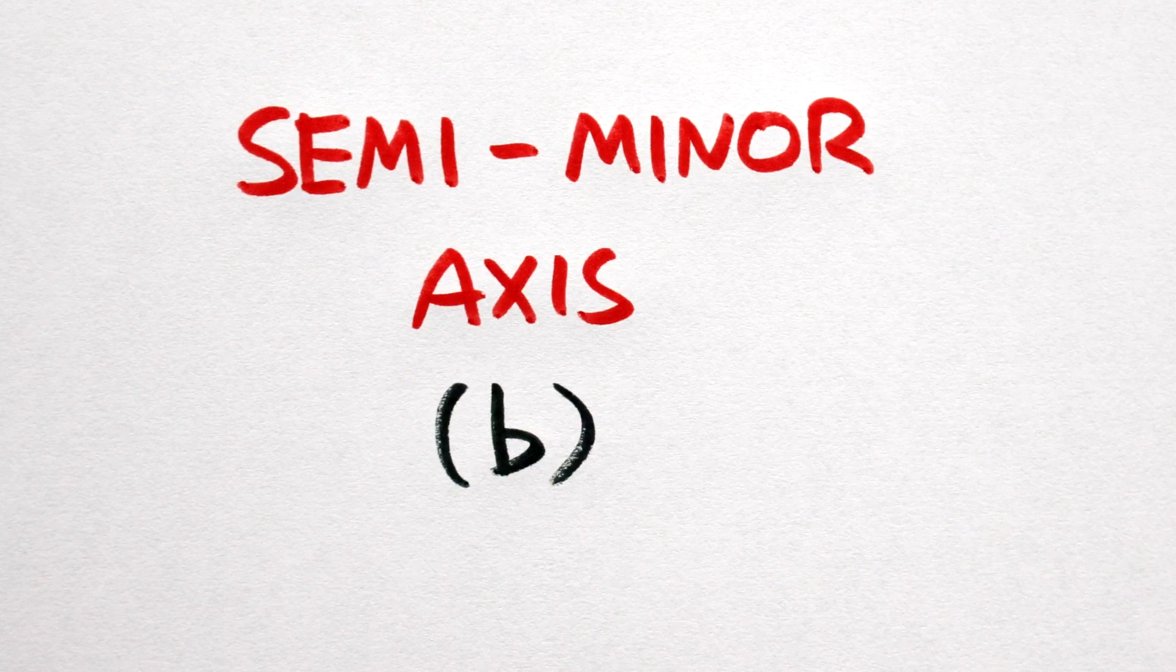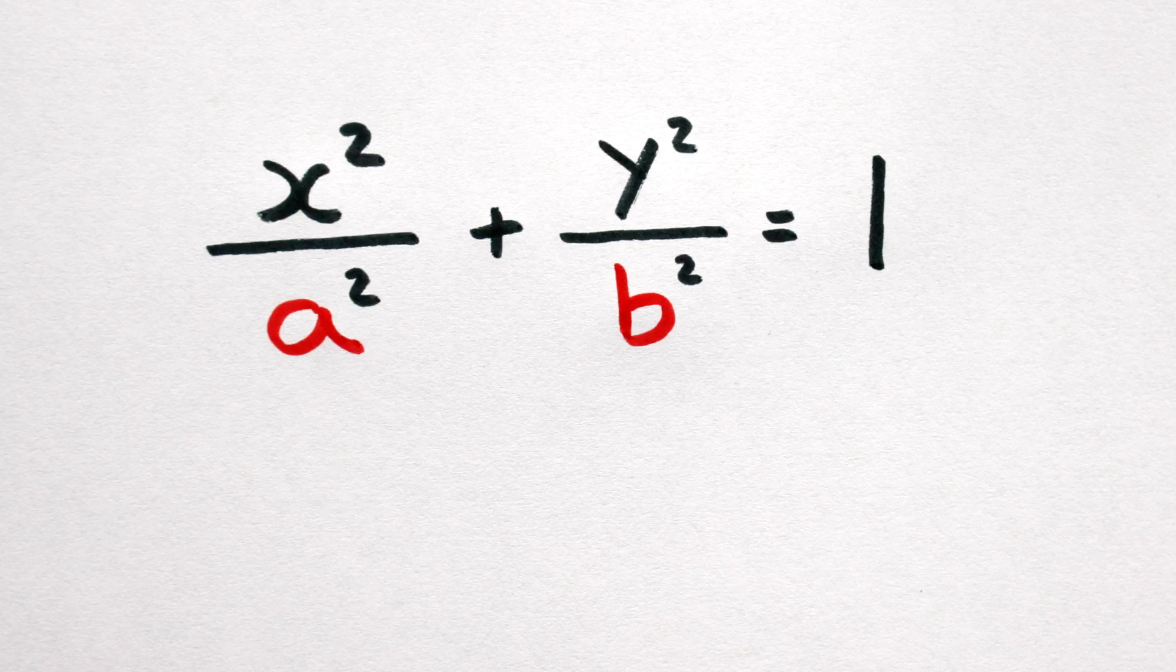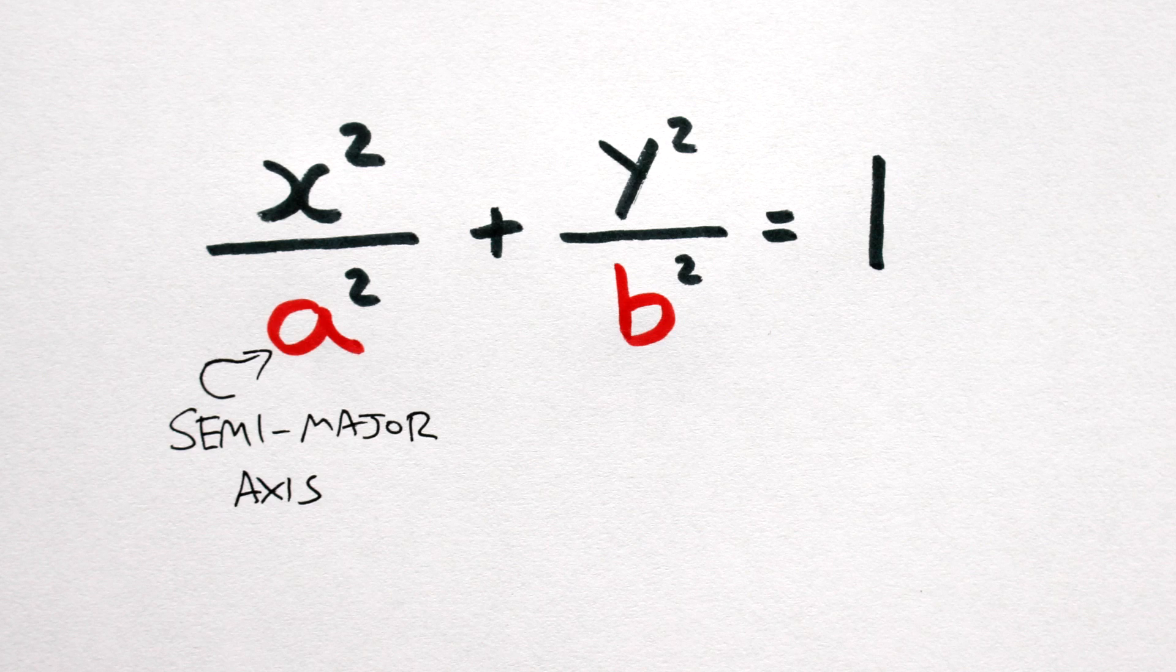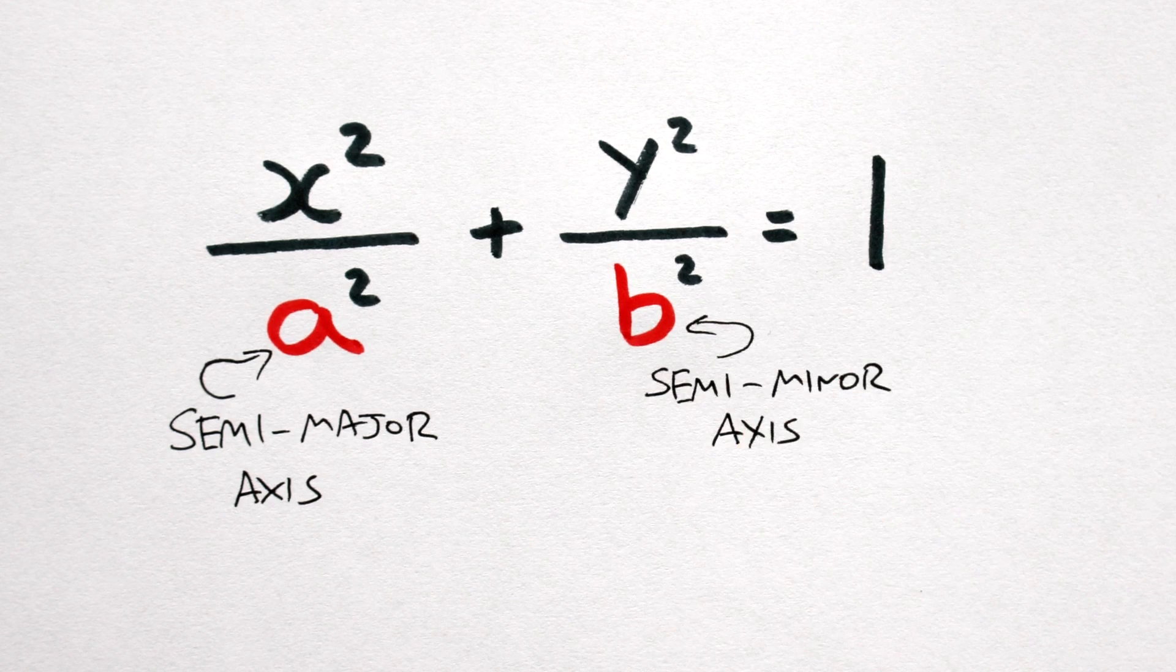Semi-minor axis. This is the equation of an ellipse, useful for graphing our orbits. Whilst we know A, our semi-major axis, the average separation between our hot Jupiter and its star, we don't know B, the semi-minor axis.